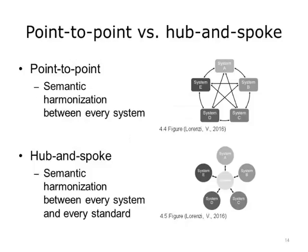Mapping to standards is sometimes called the hub-and-spoke solution. Without standards, you have point-to-point, which means you need semantic harmonization between every single system — and this picture is only showing six systems, with quite a few arrows already. The growth in complexity is exponential. In the hub-and-spoke solution, each system maps to a common standard format, which is in the center of the picture. There are only five arrows for five systems. As you add systems where all map to a standard, the growth in complexity is linear.